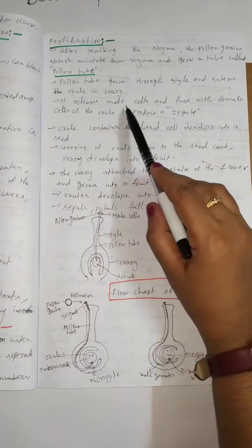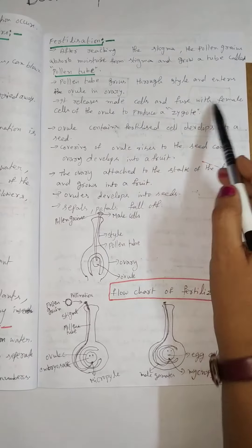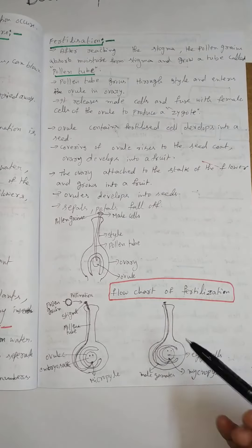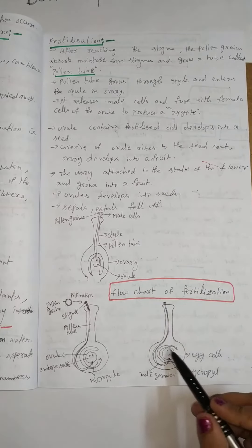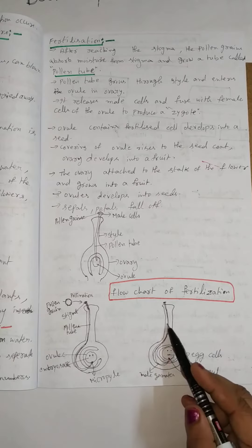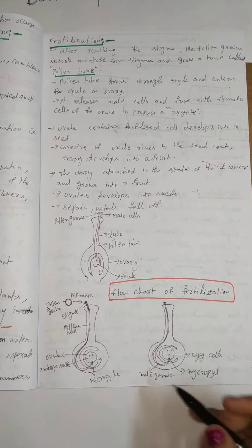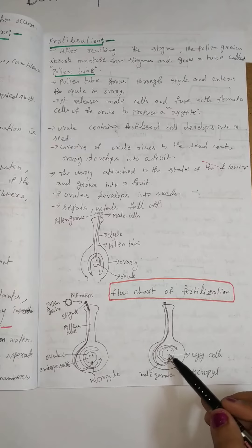It releases male cells and fuses with female cells of the ovule to produce a zygote. Here the female has egg cells and this is the pollen tube. So it enters into the ovary and releases male gametes. The egg cells and male gametes form a zygote.